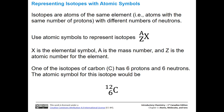Isotopes are atoms of the same element — they have the same number of protons but different numbers of neutrons. We use atomic symbols to represent isotopes. The A at the top is the mass number — protons plus neutrons added together. Z is the atomic number, seen on the periodic table. X is the elemental symbol. For carbon with six protons and six neutrons, six plus six equals 12 as the mass number, giving us the atomic symbol for carbon-12.